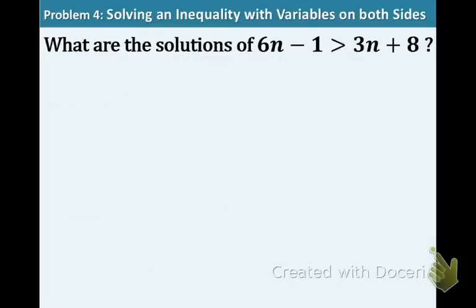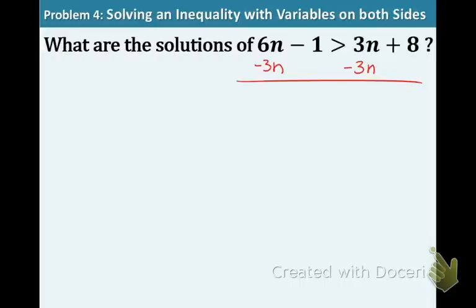Here's our first example. What are the solutions of 6n minus 1 is greater than 3n plus 8? The first thing we want to do is identify the like terms. There's a 6n on the left and a 3n on the right. We could take either one and bring it to the other side, but I would highly recommend taking the 3n to the other side if you want to work with positive coefficients. Now we have 3n minus 1 is greater than 8.